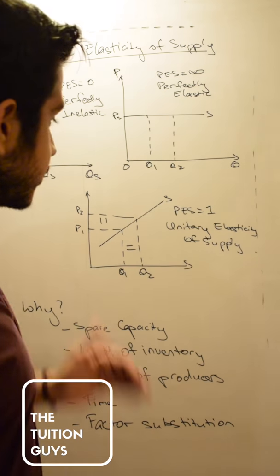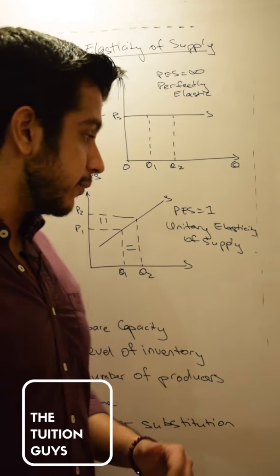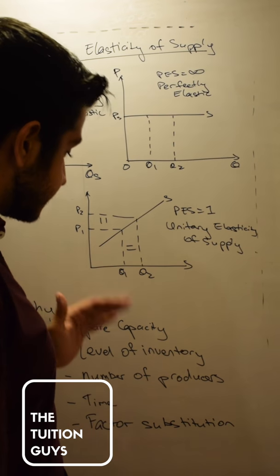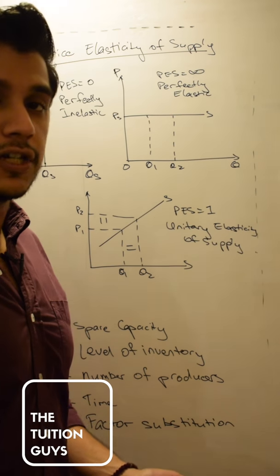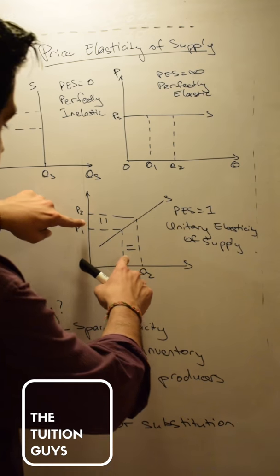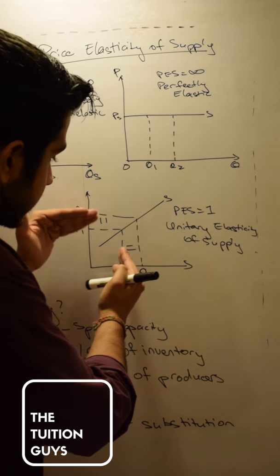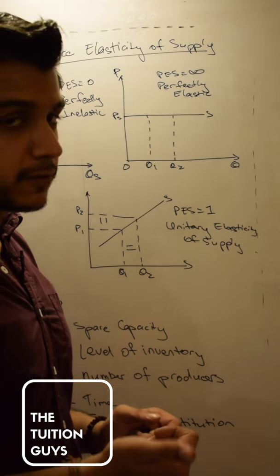Unitary price elasticity of supply will be when the proportionate change in price, the exact change in quantity supplied is occurring. That's why I've made two equal signs over here. The distance is the same. Change in price will be equal to the change in quantity supplied.